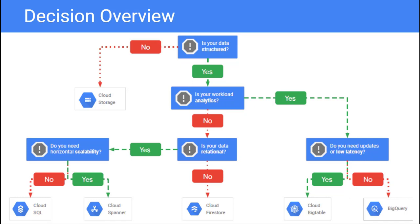The decision tree starts with the question: Is your data structured? If it is not, choose Cloud Storage. If your data is structured, does your workload focus on analytics? If it does, you will want to choose Cloud Bigtable or BigQuery depending on your latency and update needs.